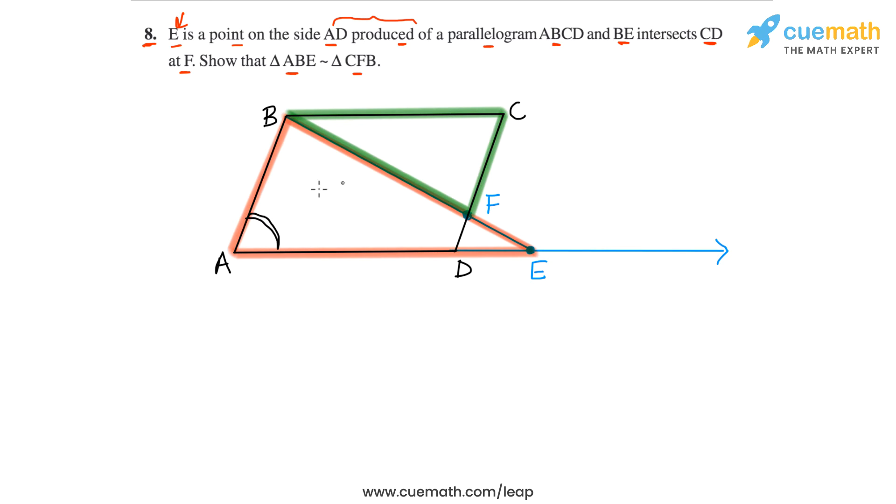BAE is equal to this angle in the second triangle, because these two are opposite angles in a parallelogram. So they will be equal.